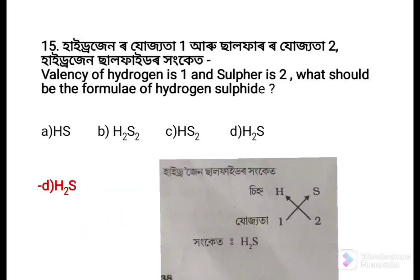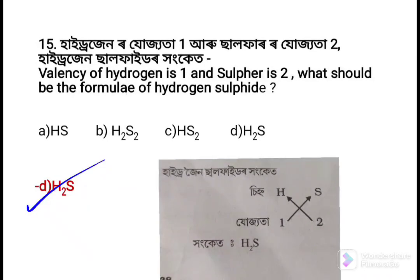Next question: The valency of hydrogen is 1 and sulfur is 2. What should be the formula of hydrogen sulfide? Option a: HS, Option b: H2S2, Option c: HS2, Option d: H2S. The answer is H2S, because hydrogen has valency 1 and sulfur has valency 2, so the formula becomes H2S.